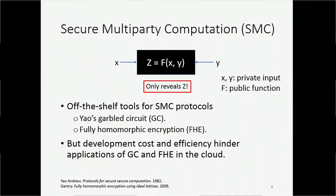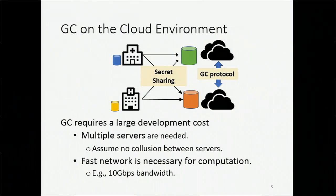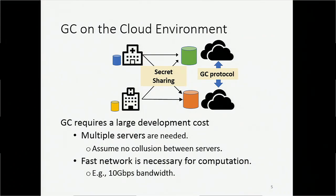When talking about data security, we use the secure multi-party computation notation. We have many tools to build SMC protocols, such as garbled circuits and fully homomorphic encryption. However, when using these tools on the cloud, we still need to face problems such as development cost and low efficiency. Garbled circuits enable us to do SMC for any function, which is great, but to use garbled circuits on the cloud we might need multiple independent and collusion-free servers, and also high-speed networks between those servers to guarantee protocol performance. Collusion-free servers and fast end-to-end networks mean lots of development cost and effort.